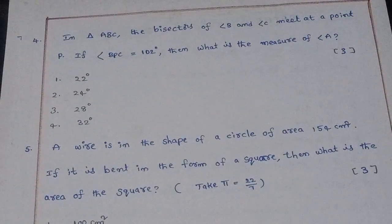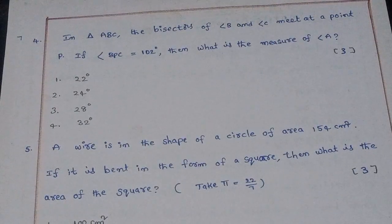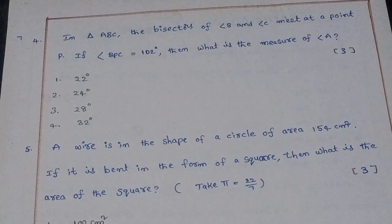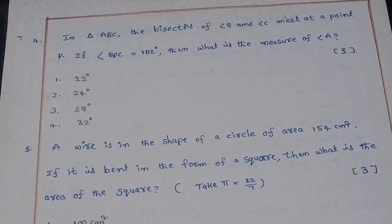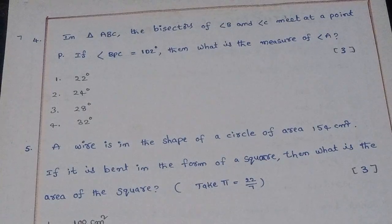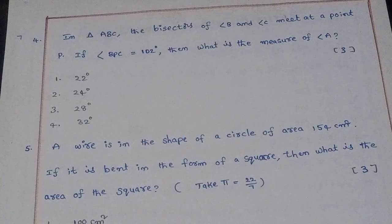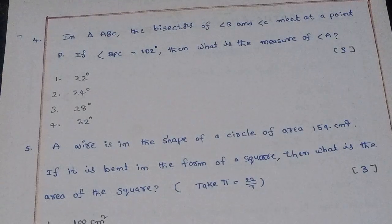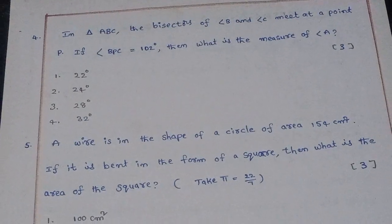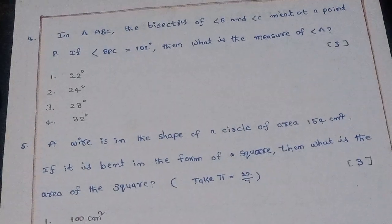Fourth question: In triangle ABC, the bisectors of angle B and angle C meet at a point P. If angle BPC is equal to 102 degrees, then what is the measure of angle A? The right answer is option 3: 24 degrees.